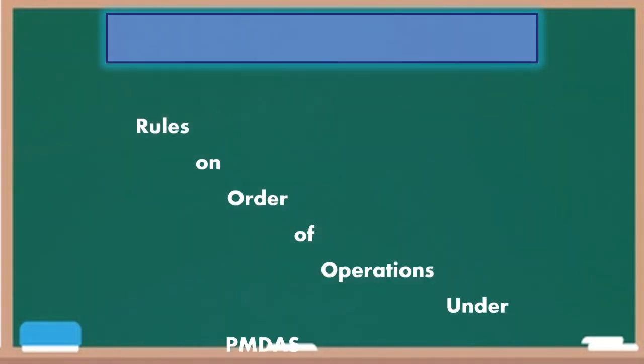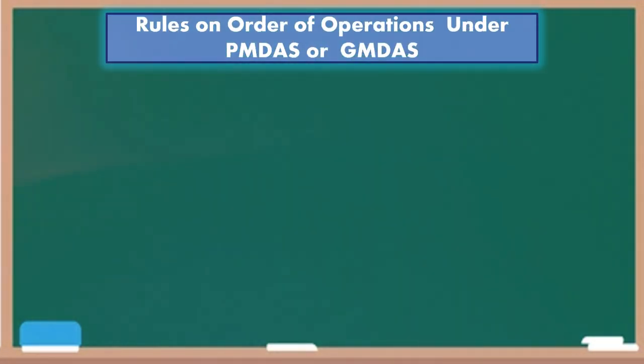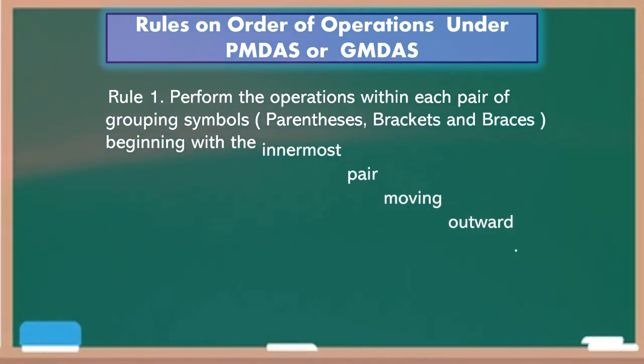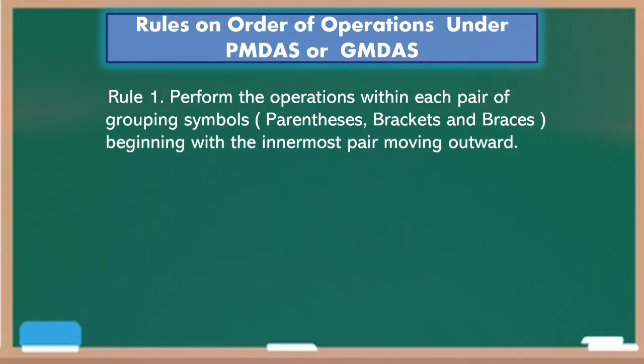Rules on Order of Operations under PEMDAS or GMDAS. Rule number one, perform the operations within each pair of grouping symbols, parentheses, brackets, and braces, beginning with the innermost pair moving outward. Example: 48 divided by parentheses 9 plus 3. Take a look at our example. What have you noticed? Correct, it contains parentheses.